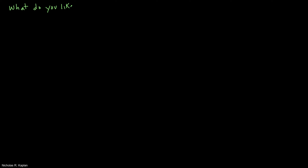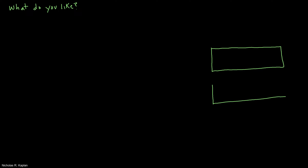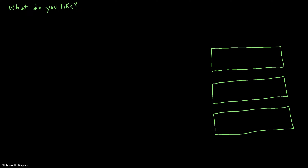What do you like? To focus you a little bit more, I want to put it in three different categories. First I want you to say what do you like to do — I need a verb, an infinitive. And then I'm going to ask you what do you like, and I want you to pick a noun, just something, a singular noun. And then I'll say what do you like — I want you to pick a plural noun.